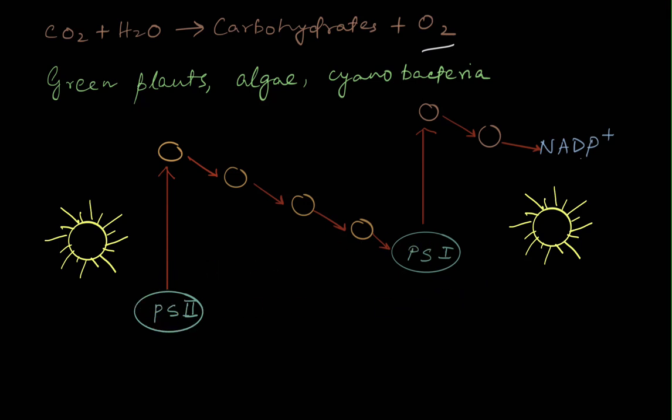And what happens is light directly falls on these photosystems. And when it does so, the electrons in the photosystem get excited. The electrons get excited and they are picked up by these round things called electron acceptors which form a chain called the electron transport chain.